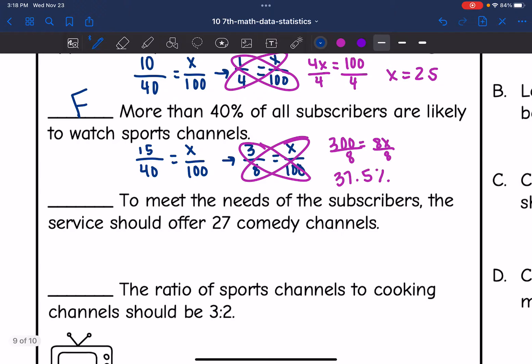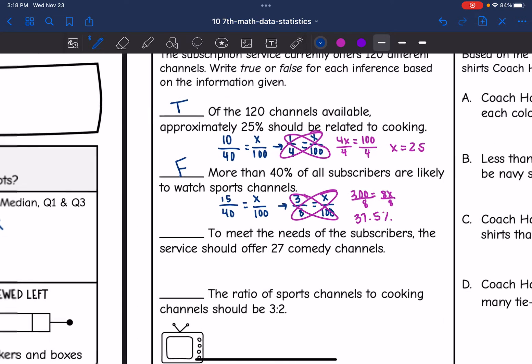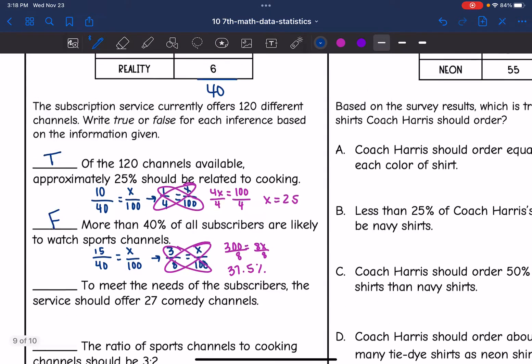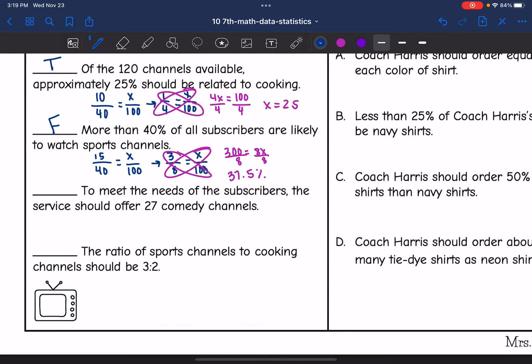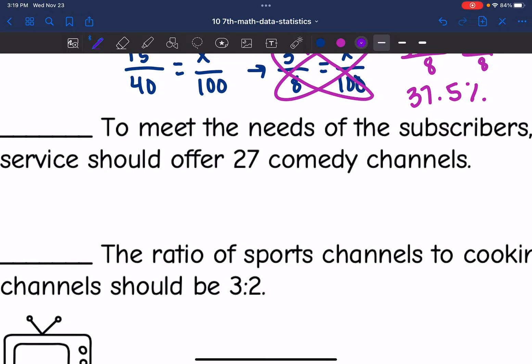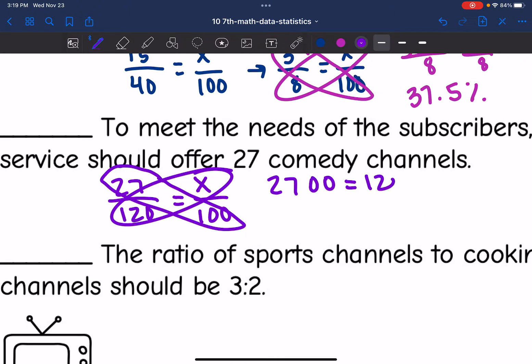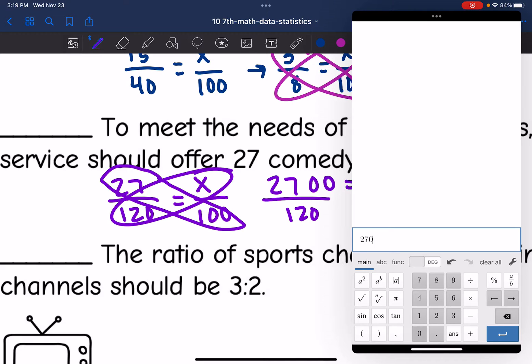And then this says to meet the needs of the subscribers, the service should offer 27 comedy channels. So 27 comedy channels. I want to figure out what percentage that would be and then I'll match it to the percentage of the subscribers. And remember, they are going to offer 120 different channels. So let's figure out what percentage would be comedy by doing 27 out of 120 equals x out of 100. So I'm going to cross multiply here. 27 times 100 is 2700. And then 120 times x is 120x. And then I'm going to divide by 120. And 2700 divided by 120 is 22.5.